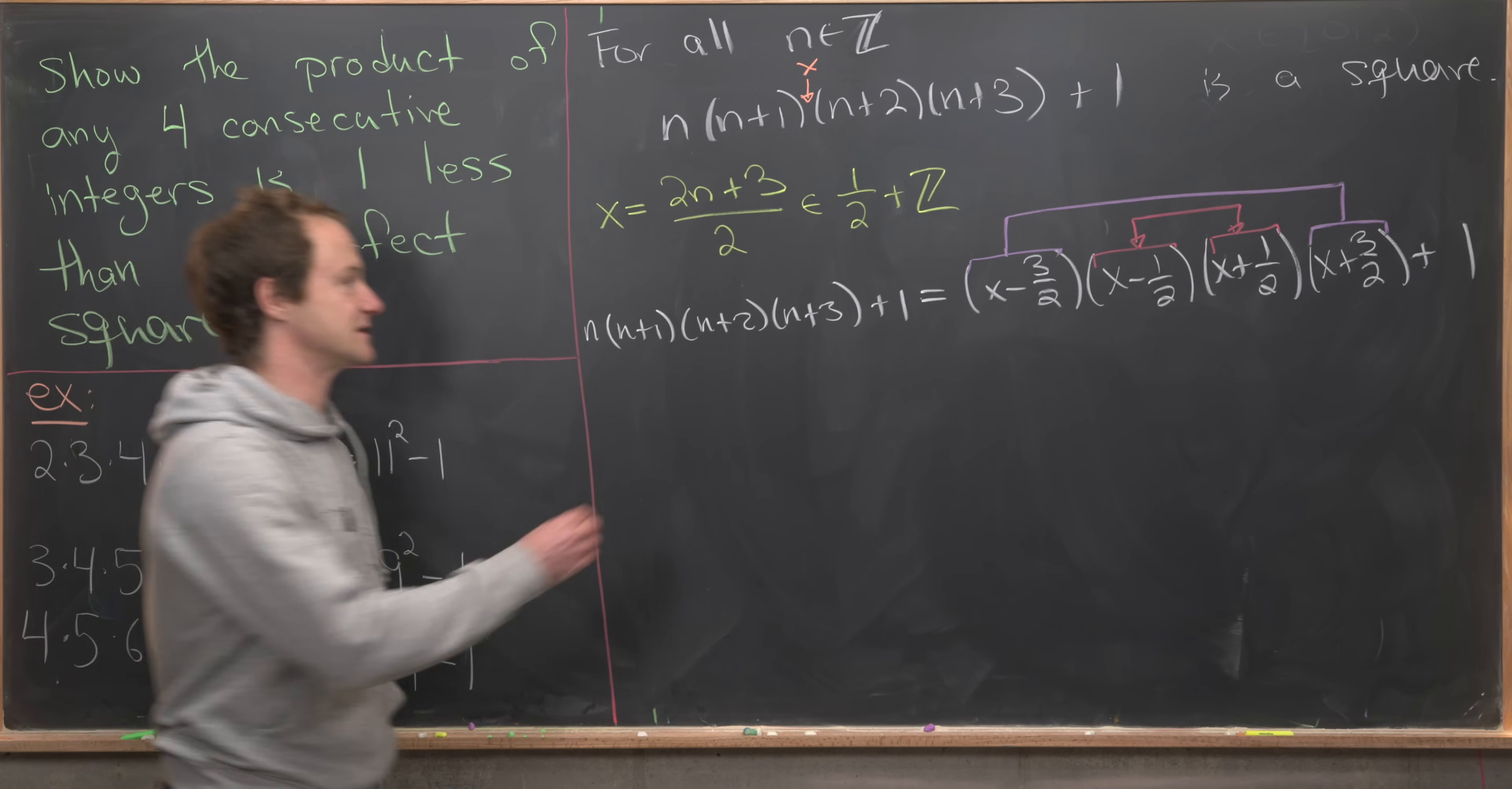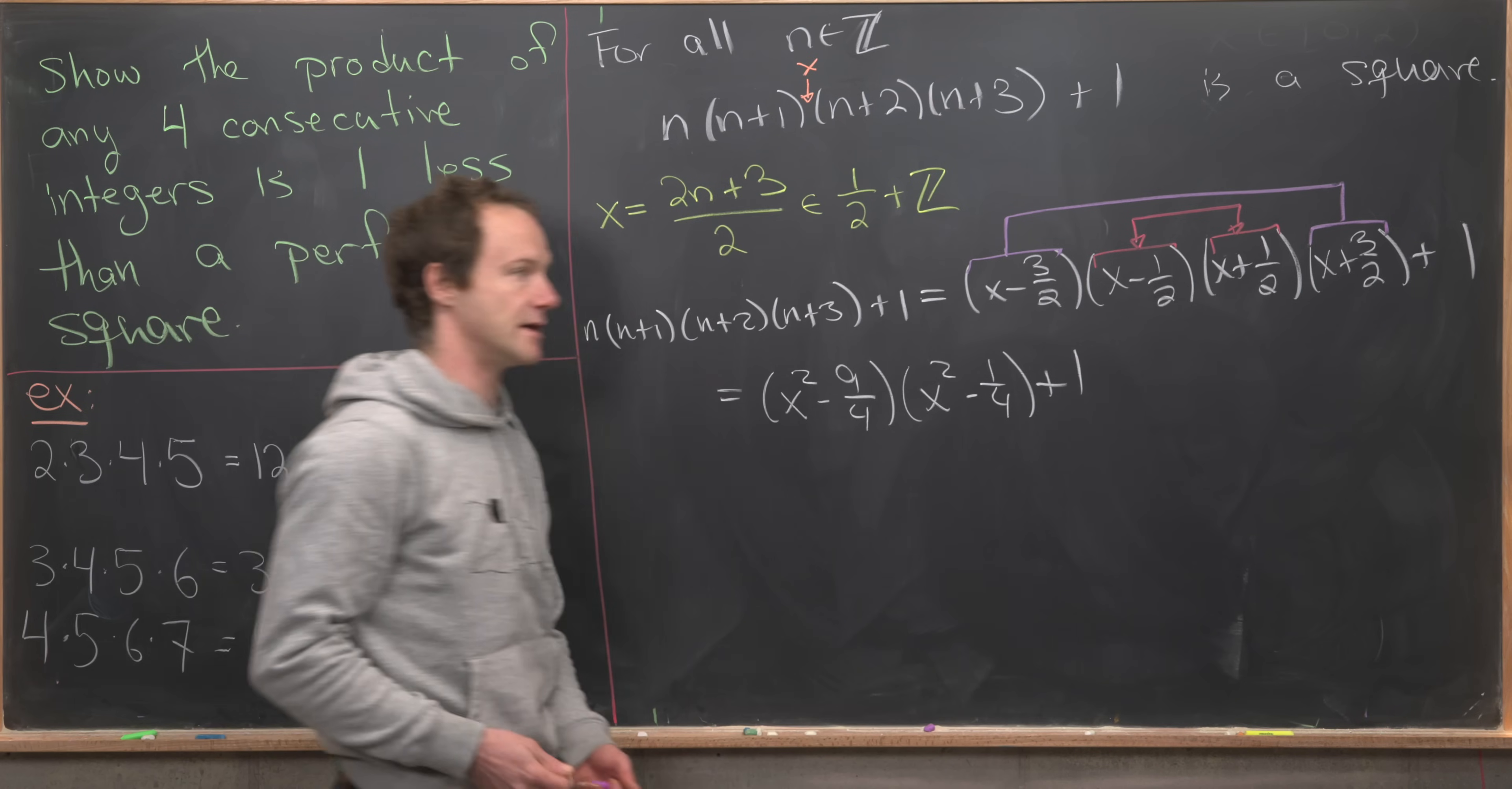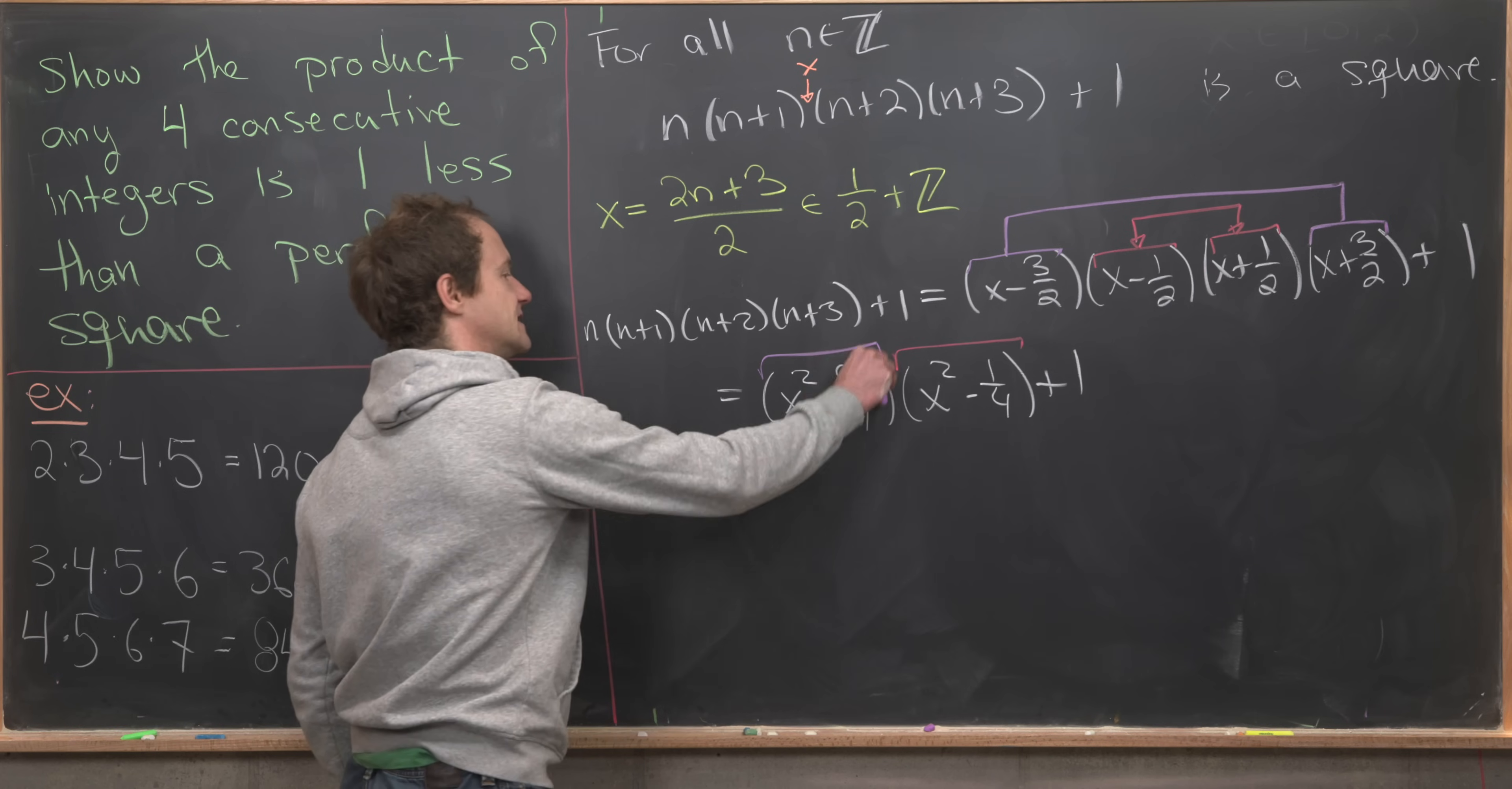So let's see what that gives us. We're going to have (x² - 9/4)(x² - 1/4) + 1. So the red things combine to give us this, and the purple things combine to give us this.